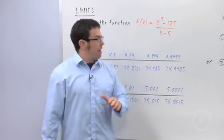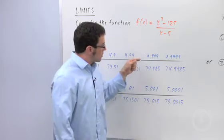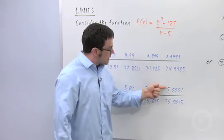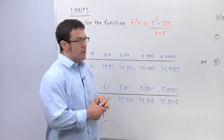So you can't plug 5 into this function, but you can get as close as you want. As you get closer and closer to 5 from both sides, the value of the function is approaching 75.